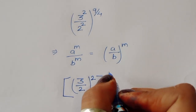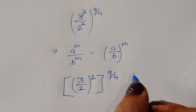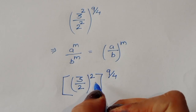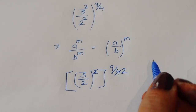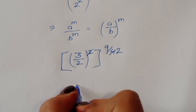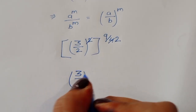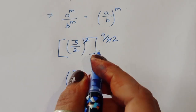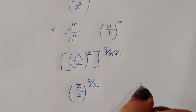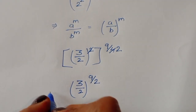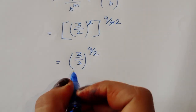Now we can cancel: 2 times 2 is 4. So the expression simplifies to (3/2) to the power (9/2). This is equal to (3/2)^(9/2).